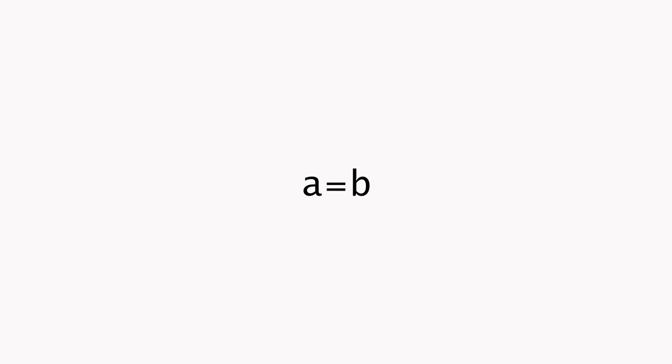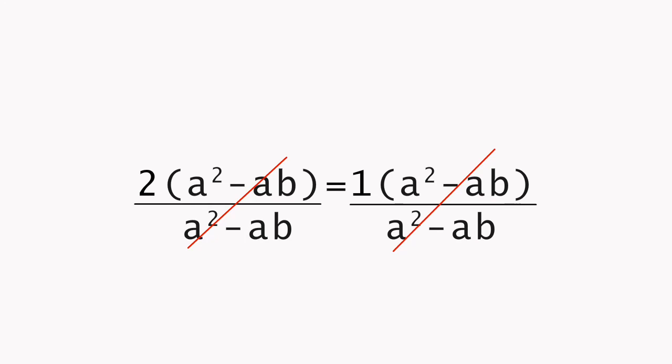Let a equal b, multiply both sides by a, add a squared to both sides, subtract 2ab. We can factor out 2 on the left and 1 on the right, divide both sides by a squared minus ab, and we have 2 is equal to 1.